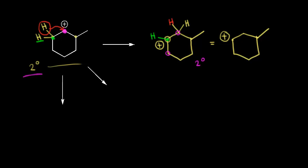Let's think about the possibility of a methyl shift, because that hydride shift didn't work out very well. So let's try to move this methyl group over to the carbon in magenta. Let's draw what we would form. Here is our ring, and we're moving our methyl group in red over to this carbon, so let me draw in a CH3 in red. That carbon already had a hydrogen on it.